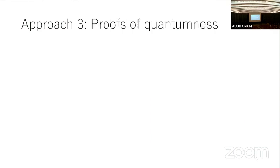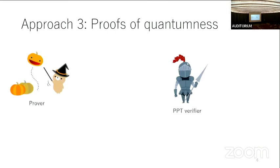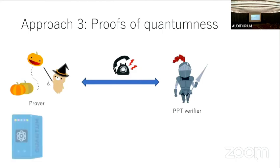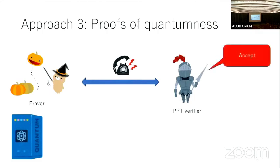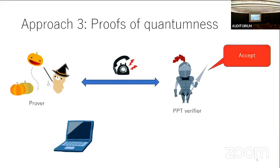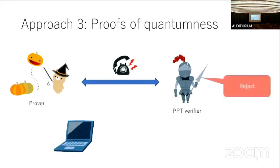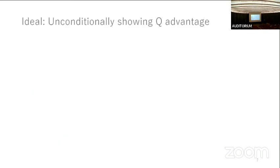The third approach is proofs of quantumness, which is an interactive protocol between a prover and a verifier. The verifier is a PPT algorithm and they exchange only classical messages. We require two properties: completeness — if the prover is QPT, the verifier accepts with high probability — and soundness — for any PPT prover, the verifier rejects with high probability. If both are satisfied, this is called proofs of quantumness.